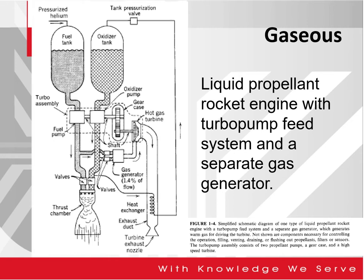The second one is the gaseous type propellant. Similarly with the chemical type propellant, they now use gases. This particular figure or schematic shows the liquid propellant rocket engine with turbo pump feed system and a separate gas generator.